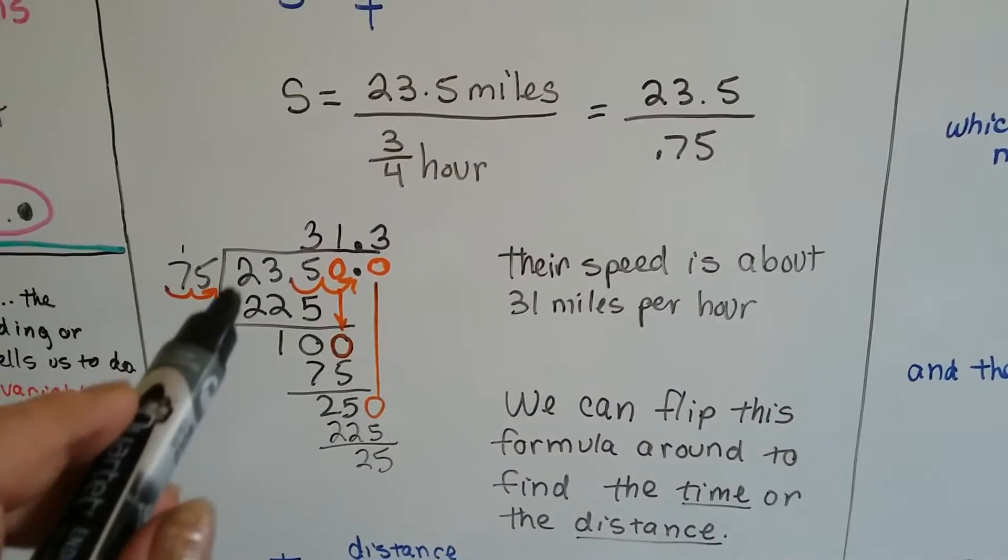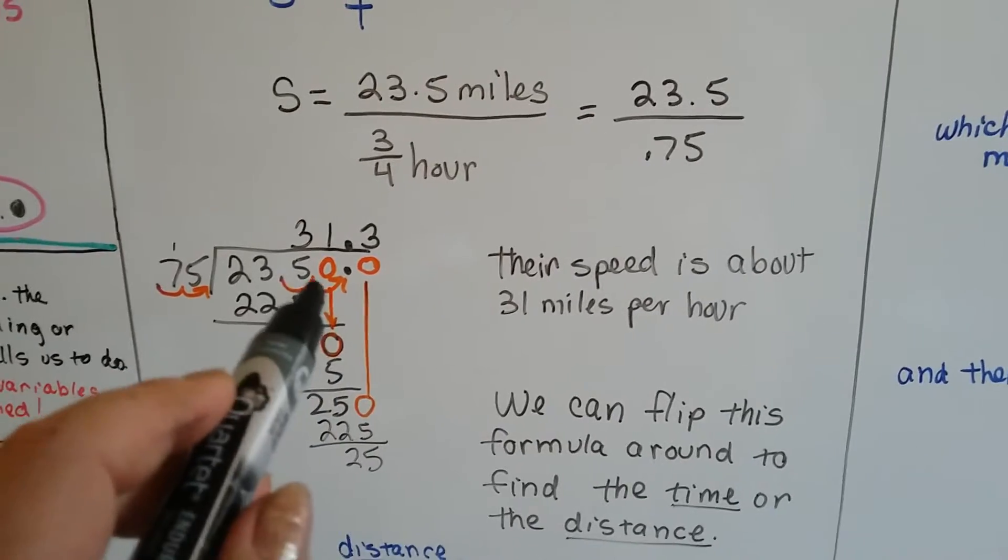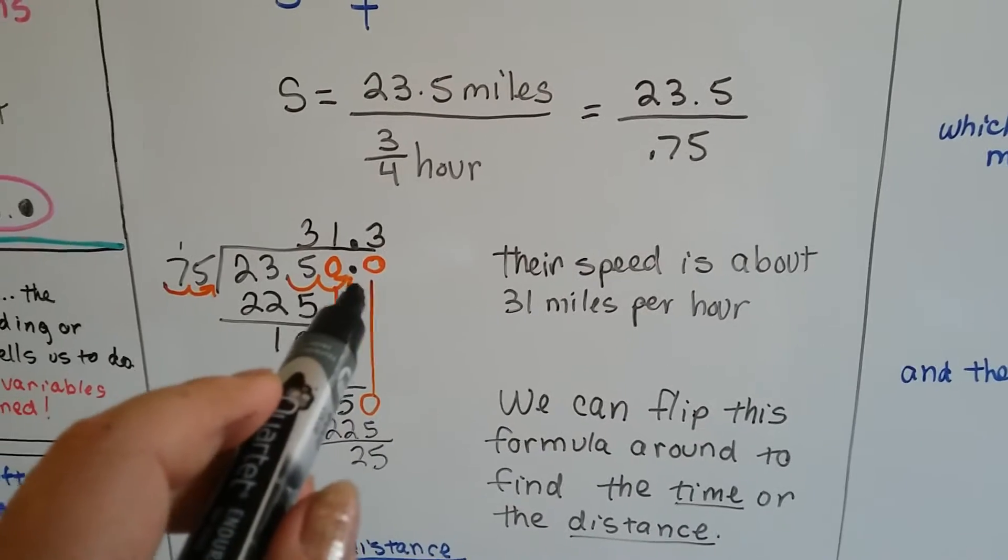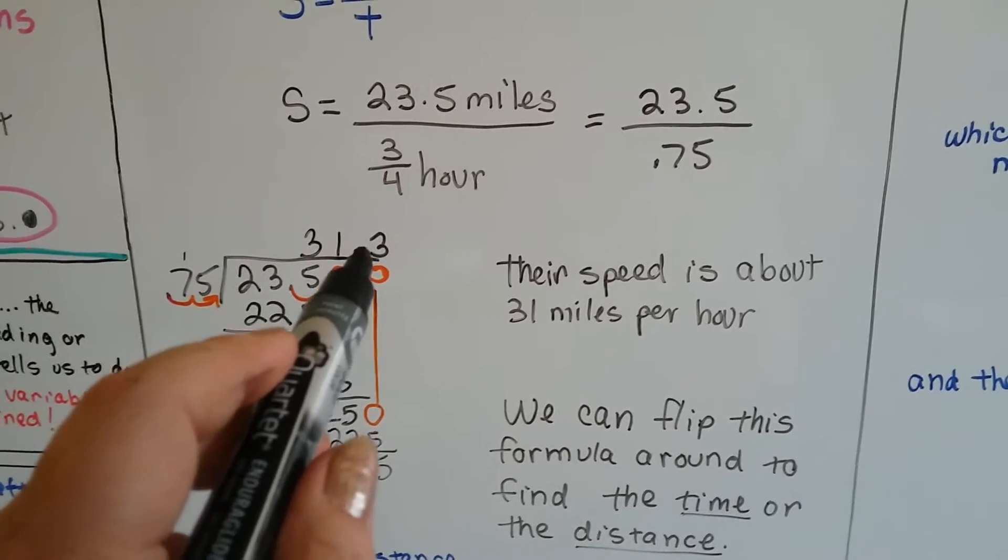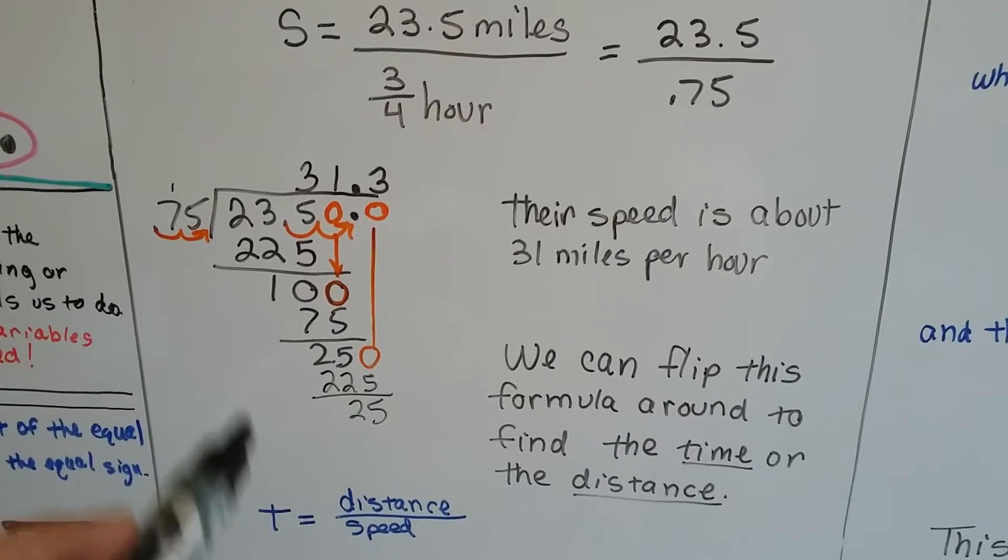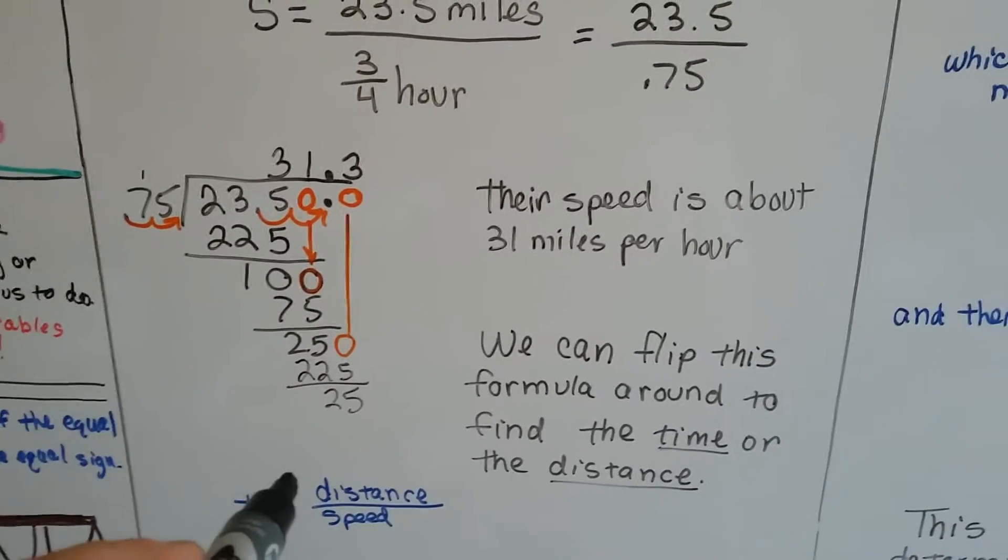I had to divide 23.5 by 0.75. So I had to move the decimal point over on the 0.75 which means I had to move it over on the dividend of 23.5 and it became 23.50 with the decimal point back here which I raised above the dividing line to do the quotient.